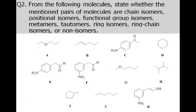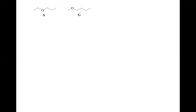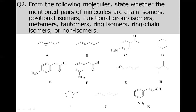Now let's discuss the second and last question for this assignment. It says: for the following molecules, state whether the mentioned pairs are chain isomers, positional isomers, functional group isomers, metamers, tautomers, ring isomers, ring-chain isomers, or non-isomers. We have been given 11 structures and asked about specific pairs.